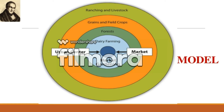Finally, the fifth ring includes ranching. This is located here for the same reason as grains and crops — ranching requires a lot of land, which means they want cheaper land.